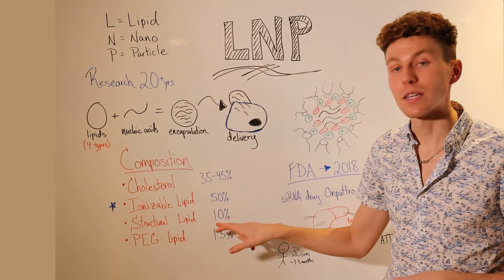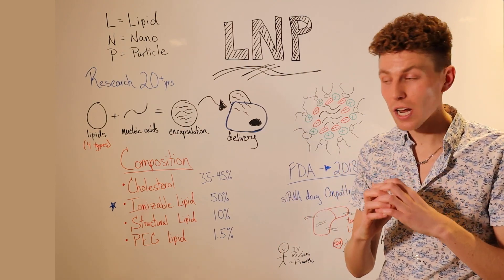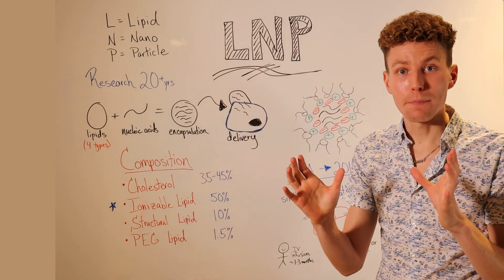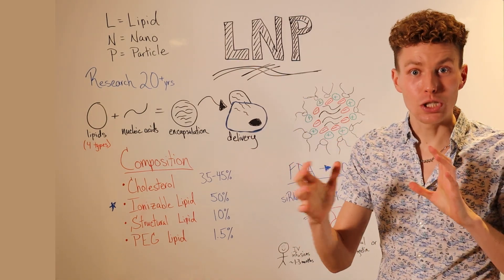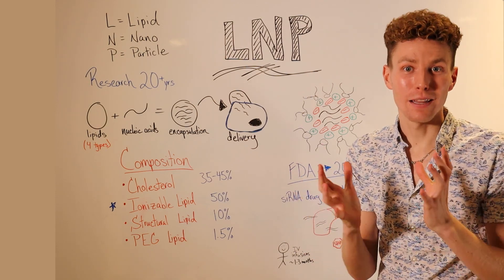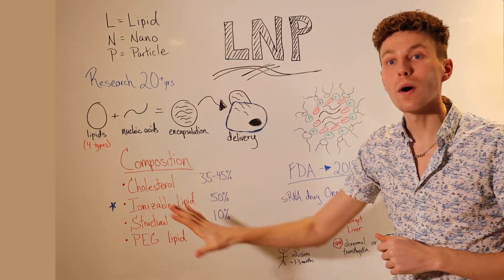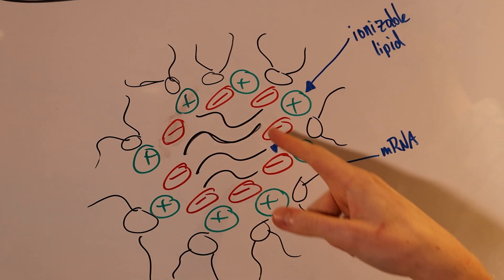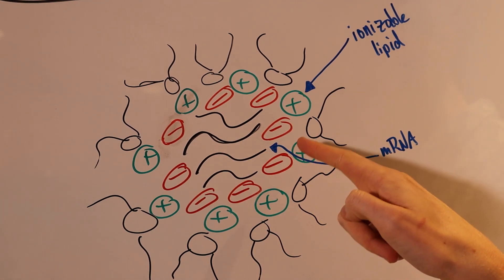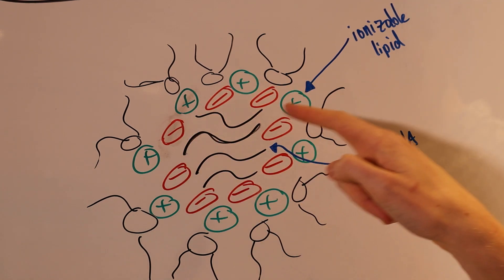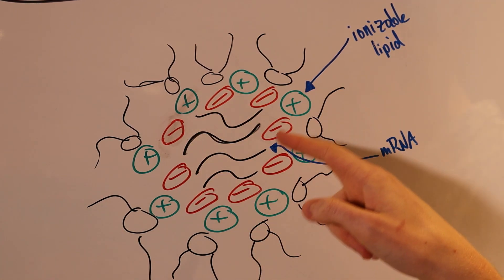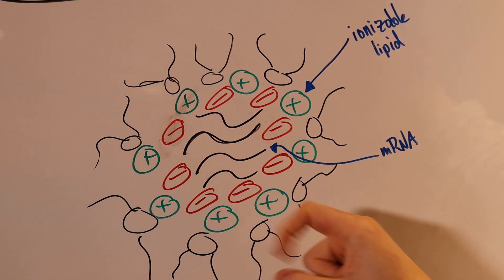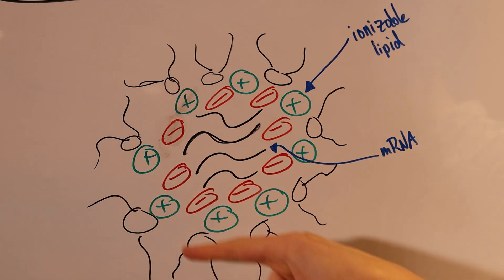We also have structural lipids, which represent around 10%, to give those LNPs their spherical shape. And then PEG lipids, which are around 1 to 2%, on the outside of the LNP, that help prevent those LNPs from sticking to each other and forming one giant lipid nanoparticle. If we zoom in on what this composition actually looks like, we have our drug or mRNA in the center, which is negatively charged, surrounded by ionizable lipids, which are positively charged, with some cholesterol and structural lipids mixed in, and then PEG lipids on the outside to prevent clumping of the different LNPs within a syringe.